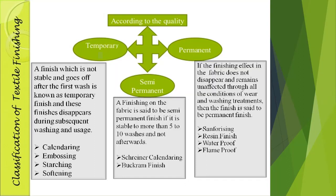A semi-permanent finish is one that is stable to more than five to ten washes but not beyond loads. Examples of semi-permanent finishes include schreinering, calendaring, and backed finishes. Permanent finishes, as the name implies, do not disappear and remain unaffected through all conditions of wear and washing treatment. Examples of permanent finishes are sanforizing, resin finish, waterproof, and flameproof.